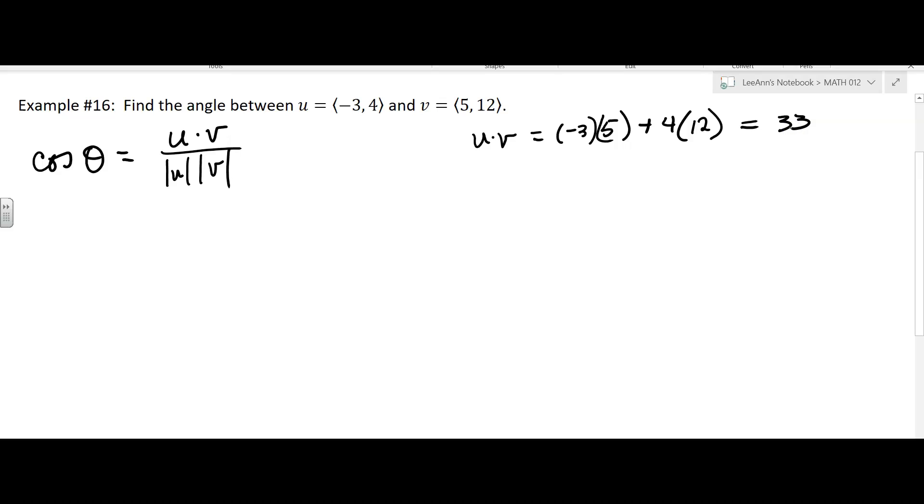Okay, so that was the dot product. Then we have to find the magnitude of u, which is going to be the square root of negative 3 squared plus 4 squared, which is going to be the square root of 25 because 9 plus 16, and then that's just going to be 5. So nice, it's not the square root.